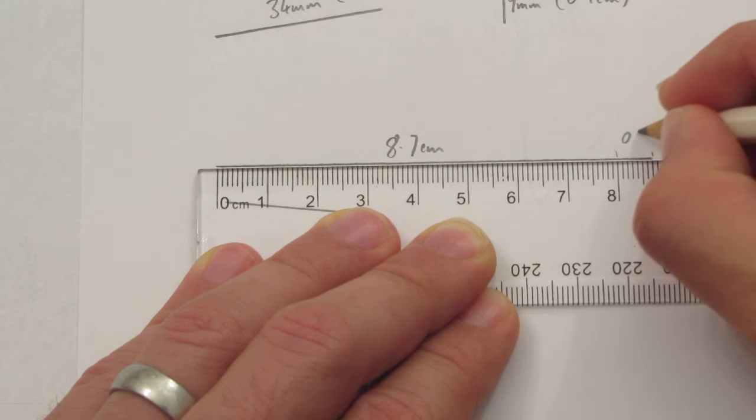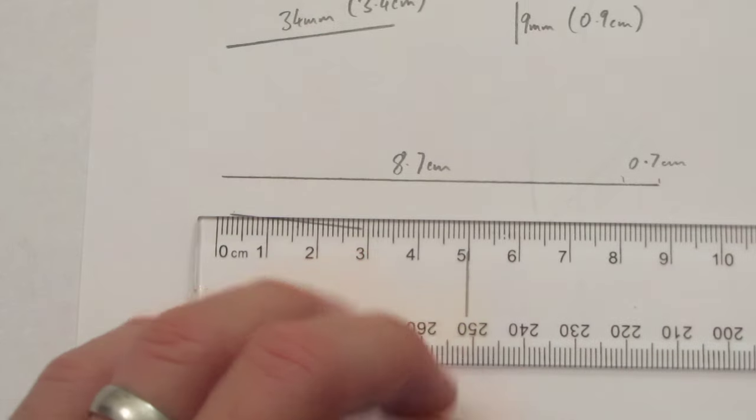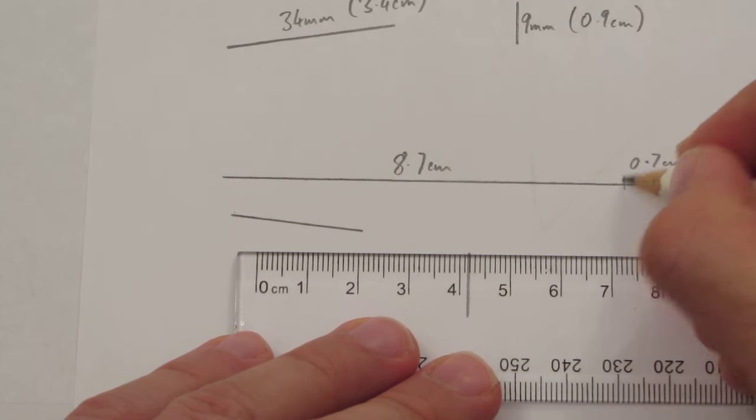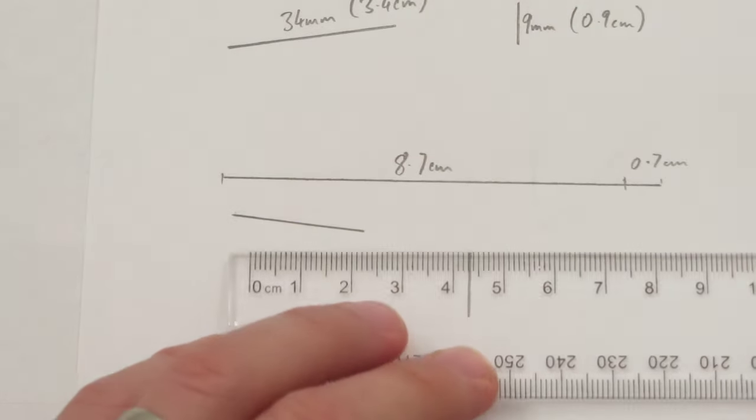That bit is the 0.7 part of the line and then from there back to the beginning that was the 8 centimeter part.